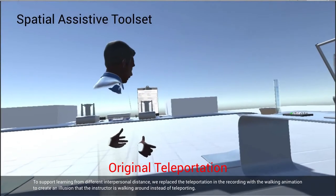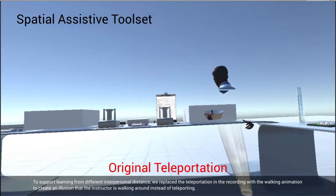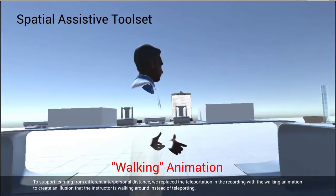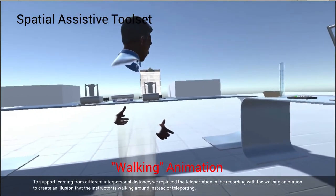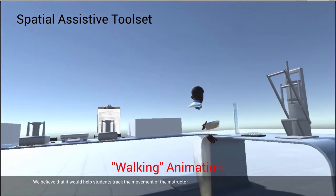To support learning from different interpersonal distance, we replaced the teleportation in the recording with the walking animation to create an illusion that the instructor is walking around instead of teleporting. We believe that it would help students track the movement of the instructor.